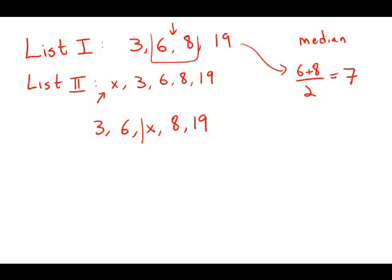And in fact, the only way that this list is going to have a median of 7 is if x has a value of 7. And so x equals 7, this is answer choice B.